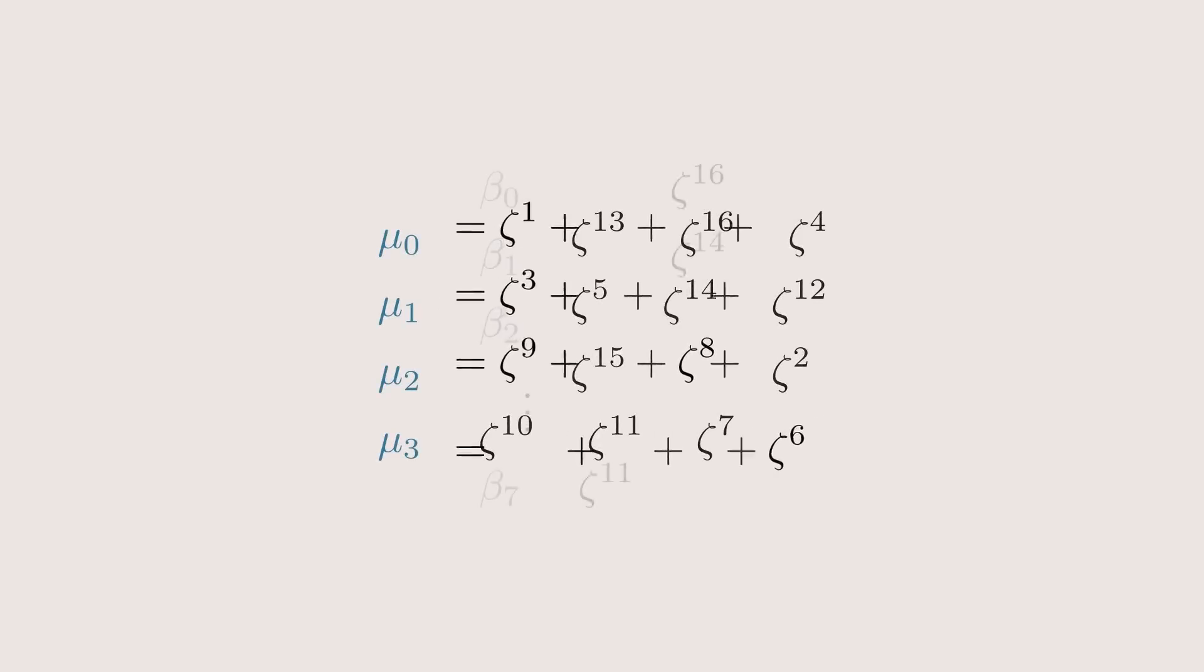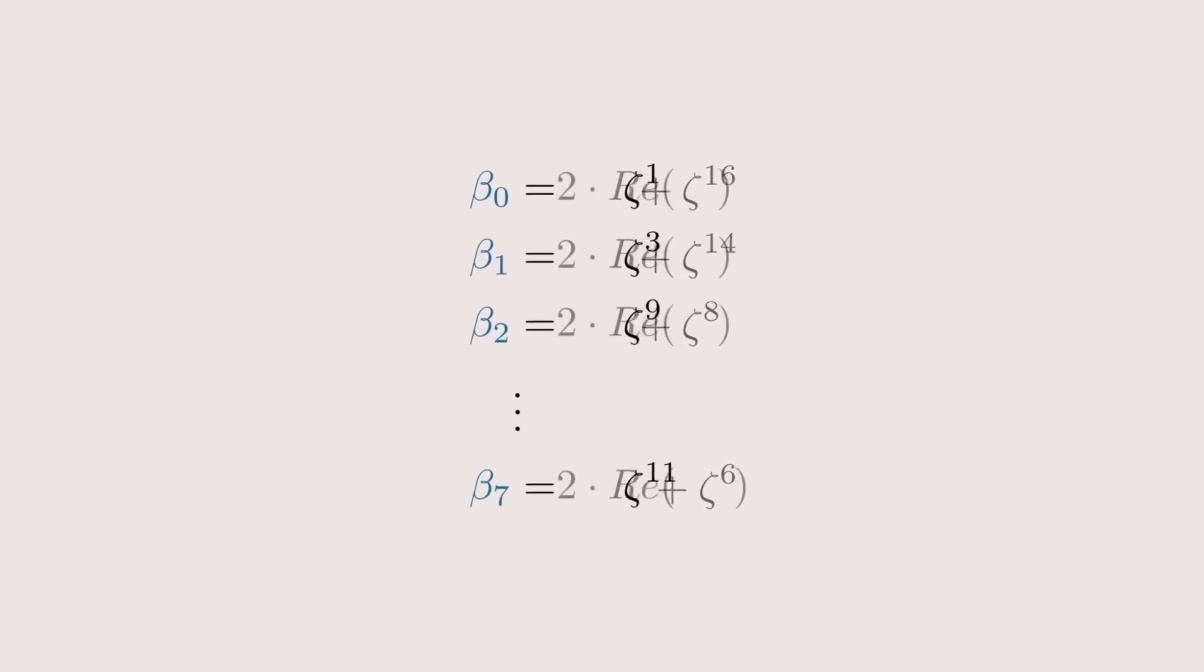So β₀ is ζ₁ plus ζ₁₆, because they are conjugates, this is just twice the real part. And therefore, β₀ is actually just 2 times the cosine of our angle, 2π over 17.